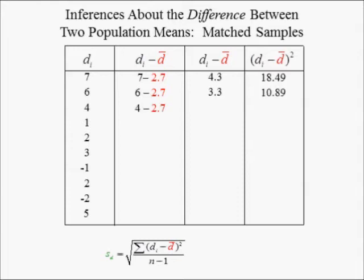The third deviation from the mean differences in delivery times is 4 minus 2.7, or 1.3 hours. The third squared deviation from the mean differences in delivery times is 1.69 hours squared.